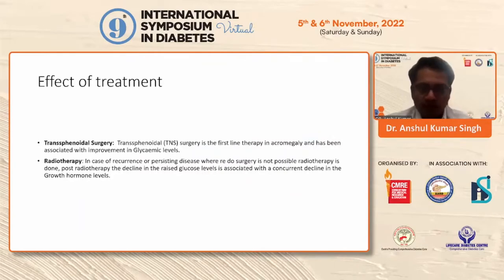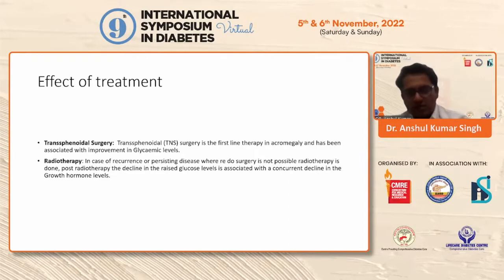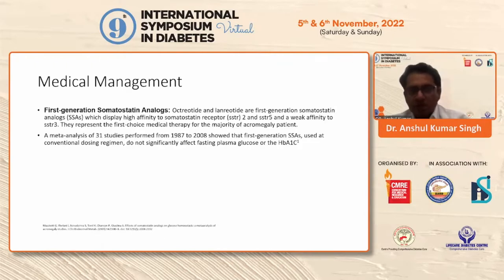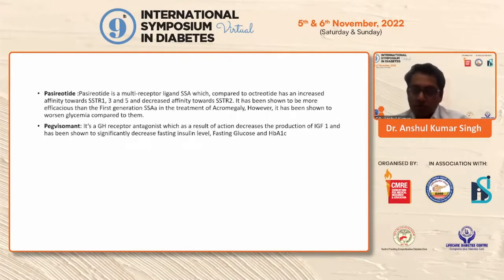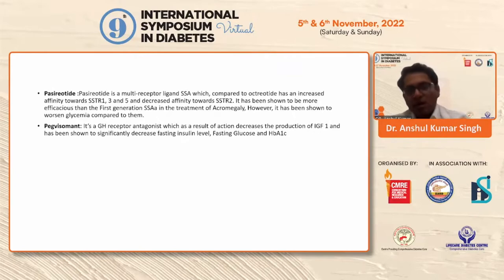Regarding the effect of treatment: we went for transsphenoidal surgery, as already mentioned, but the patient became hypoglycemic. Generally, both radiotherapy and transsphenoidal surgeries are associated with decrease in growth hormone levels and associated decrease in blood glucose levels. For medical management, the first-line are somatostatin analogues. First-generation analogues — octreotide, lanreotide — have minimal effect on glycemic levels. However, the newer analogue pasireotide, which has greater affinity towards somatostatin receptors 1, 3, and 5, is notorious for causing hyperglycemia. Pegvisomant, on the other hand, decreases IGF-1 and has been shown to decrease fasting insulin, fasting glucose, and HbA1c.